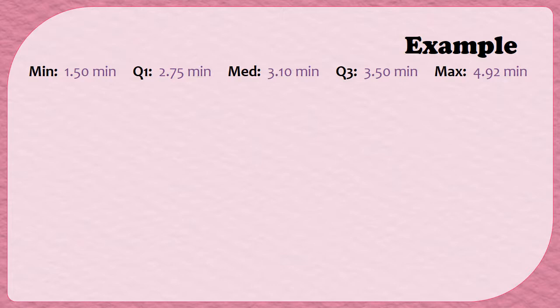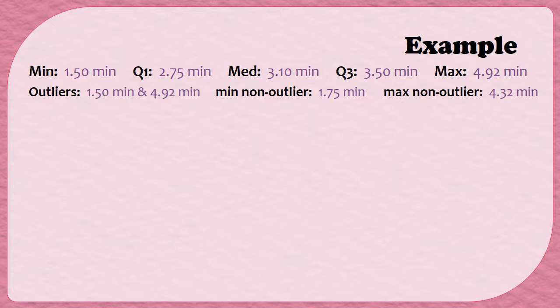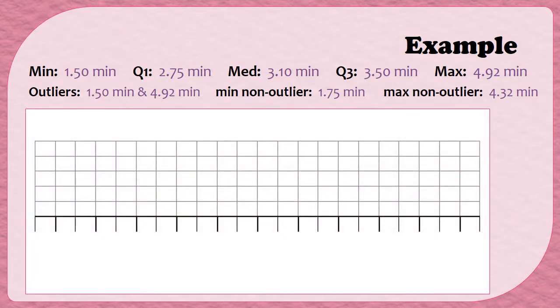All right, so here's a summary of the information we just found. We have our five-number summary: our minimum, Q1, median, Q3, and maximum. And then we also found that we had two outliers, one at 1.5 and the other at 4.92. And I also need to know what my minimum and maximum non-outlier values were. Now, if I don't have outliers in my data set, then the minimum and maximum non-outliers will be the same as the minimum and the maximum in my five-number summary, so I don't have to explicitly state them. But because we had outliers in this data set, I do need to make sure that I write those down.